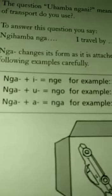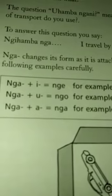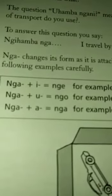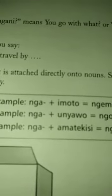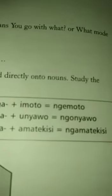And then nga plus a noun that starts with the letter a remains as nga. I'm going by taxi: ngi hamba ngamatekisi.